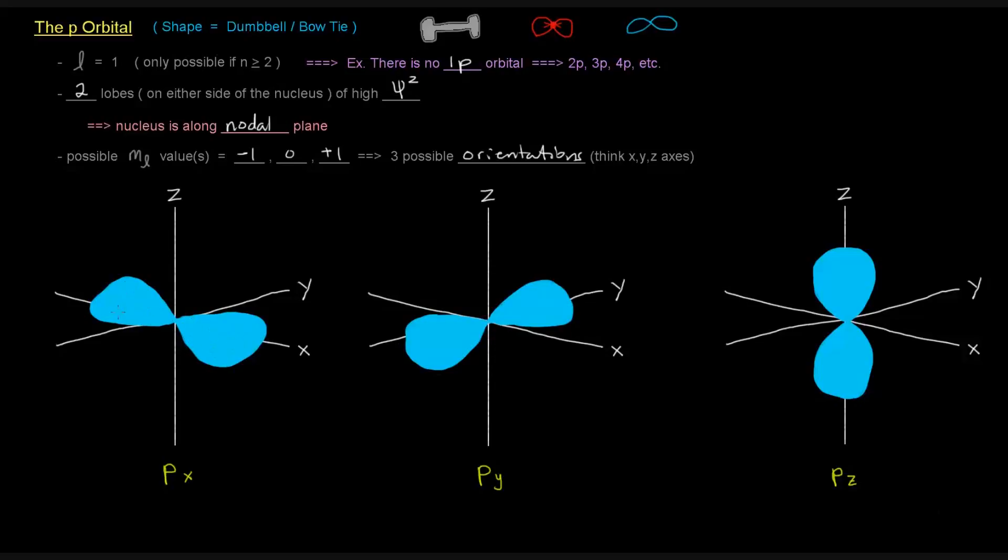So this one's on the px, this one's on the py, and this one's on the pz. So they're on the different axes in 3D space.